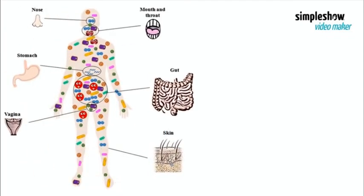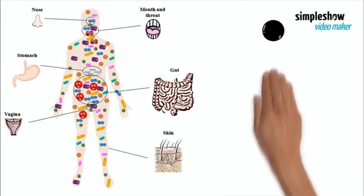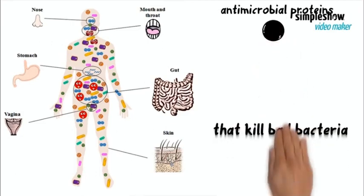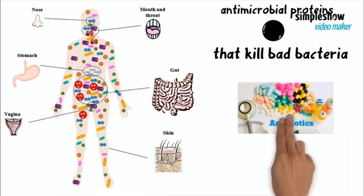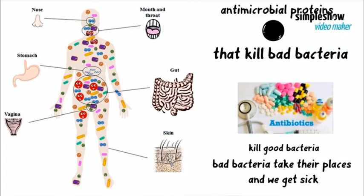In addition to these defenses, most epithelial surfaces are associated with a normal flora of beneficial bacteria that don't cause any diseases and compete with bad microorganisms for nutrients and for attachment sites on our cells. The normal flora can also produce antimicrobial proteins, such as colicins, that prevent colonization by other bacteria. That's why when good bacteria are killed by antibiotic treatments, bad microorganisms frequently replace them and cause diseases.